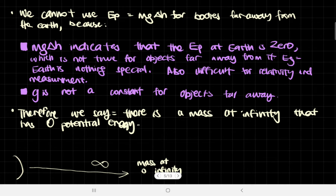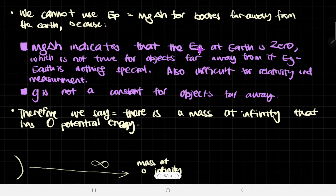For example, the sun, or even the moon. And that's for two reasons. First of all, MGH indicates that the potential energy at Earth is zero, because obviously if the height from the surface of the Earth equals zero, then the energy would be zero — that's what it's automatically assuming.